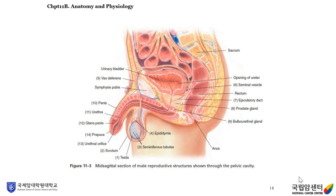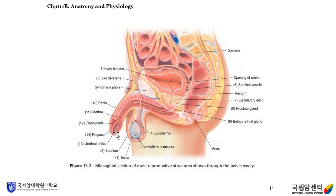This figure shows a midsagittal section of male reproductive structures through the pelvic cavity. Number one is the testes, number two is the scrotum, number three is the seminiferous tubules, and you can also see the epididymis. Number five is the vas deferens, which goes into the seminal vesicle. You can see the ejaculatory duct inside the prostate gland, the bulbourethral gland, the urethra covered by the penis, and on the tip of the penis the prepuce, urethral orifice, and glans penis.